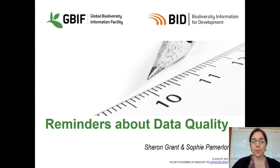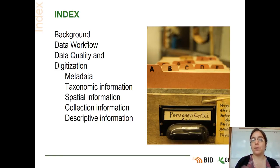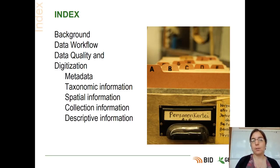Now that we've talked about the different origins of data, I'm going to introduce a new video about some reminders about data quality. The plan will be as follows: first, we'll do a little contextualization about the processes of data quality; then, we'll go into detail about the data workflow; then, about data quality and digitization and what we can do to ensure our digitized data are good enough; and then we'll go into each category of data quality — the metadata, the taxonomic information, spatial information, the collection information, and the descriptive information.